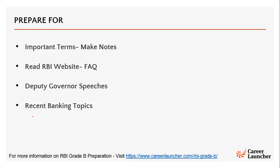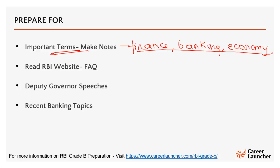You read Economic Times and The Hindu on a daily basis and start making a notebook of terminologies that you need to build. You need to make notes on important terms of finance, banking, and economy. For example, some of you might not know what a CRR is — when you read this term in the newspaper, you write it down along with its explanation, essentially creating a book with all these terminologies that becomes a ready reckoner of reference.